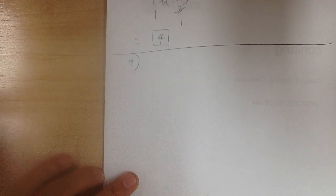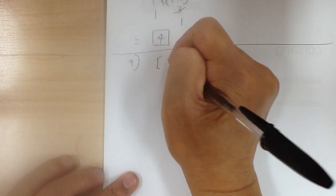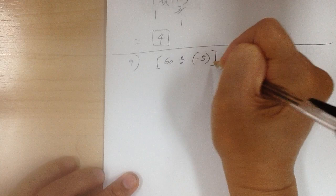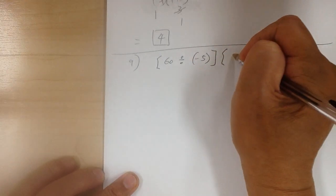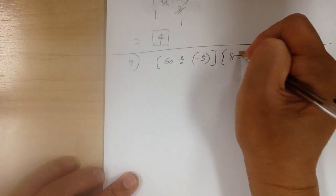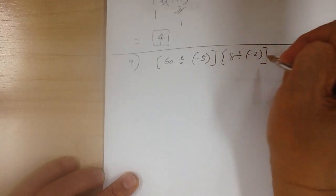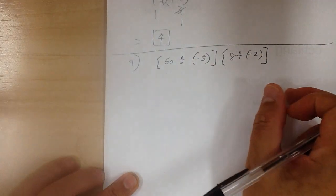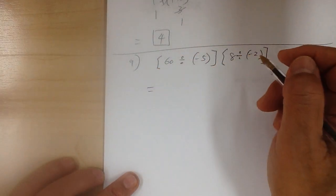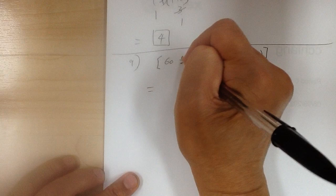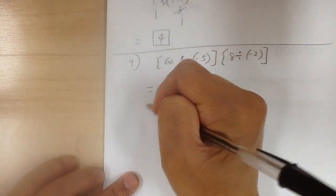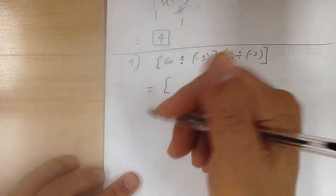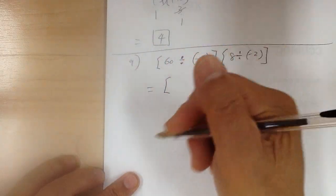Next one. You have the bracket: 60 divided by negative 5, bracket, times bracket: 8 divided by negative 2. You have to do each bracket individually. If you apply the steps, you can just divide the simple numbers, but I'm going to do it the long way to apply the steps.